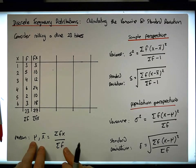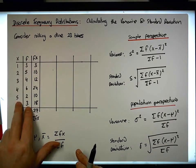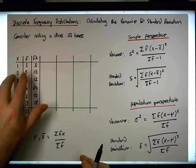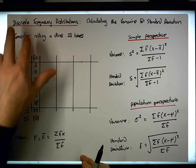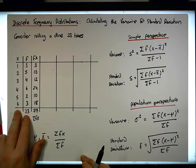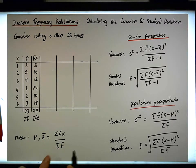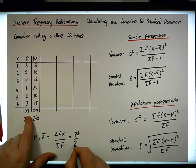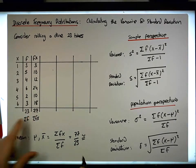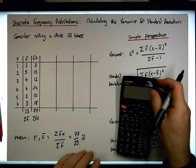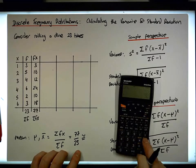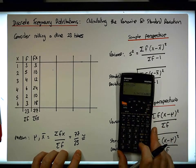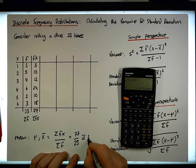So this value here now is the sum of the fxs. So irrespective of whether it's a population or whether it's a discrete frequency distribution for a sample, the mean value is exactly the same. So in this case, it's going to be 77 divided by 23. And when we do that on our calculator, we have 77 divided by 23. It gives us a value of about 3.35.